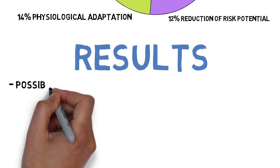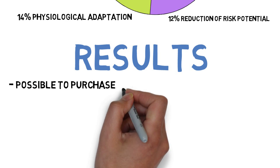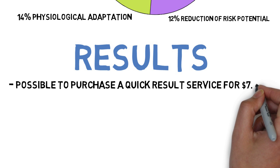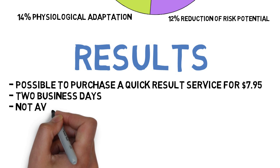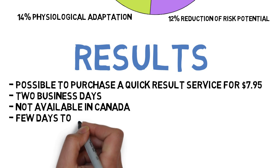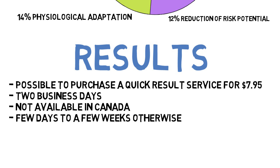In most states it is possible to purchase a quick results service for $7.95. Canadians do not have this option at this time. With this option, you can receive your unofficial results within two business days after writing your exam. Without this option, the wait usually takes between a few days and several weeks depending on busyness.